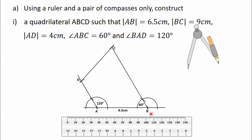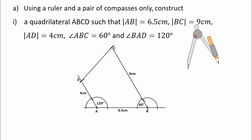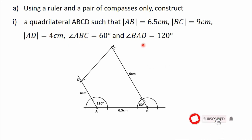The length of side AB is 6.5 cm, the length of side BC is 9 cm, the length of side AD is 4 cm, angle ABC is 60 degrees, and angle BAD is 120 degrees. I'm going to take both the compass and the ruler off so you can see the quadrilateral clearly. We are now done with the first part of the question. We are going to continue with the remaining parts in the next video. See you then — bye-bye.